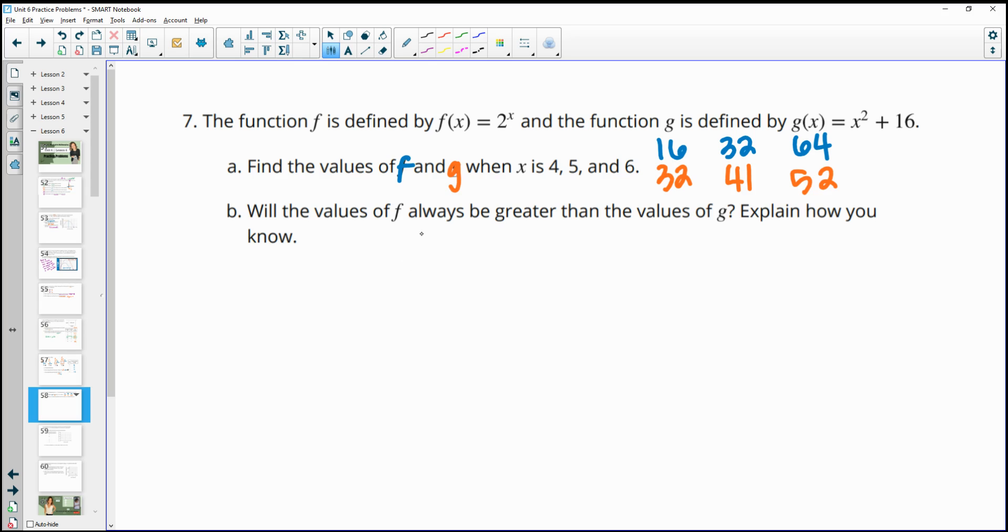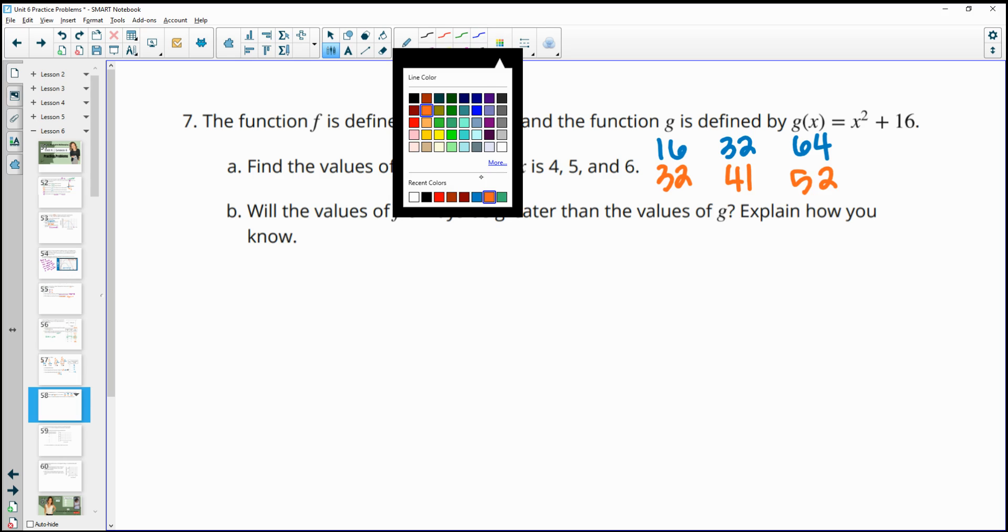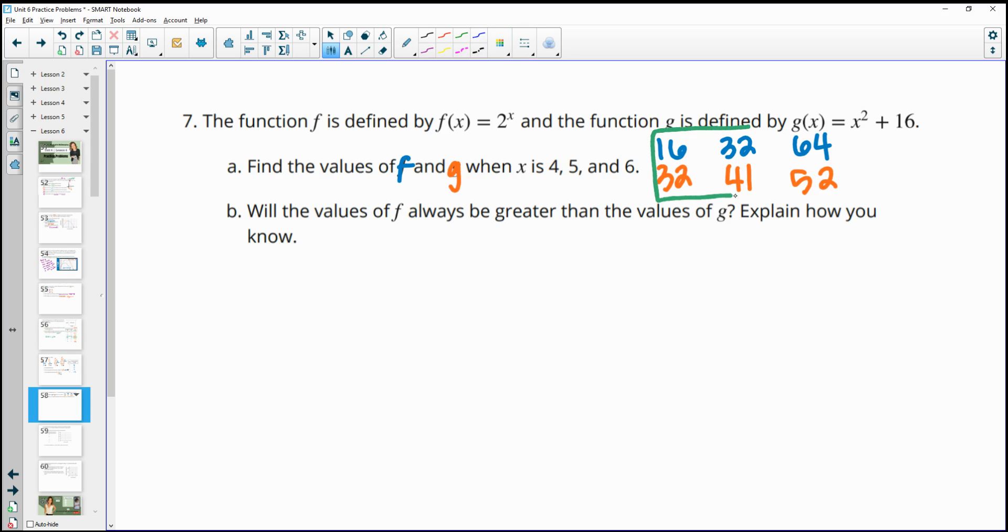Will the values of f always be greater than the values of g and explain how you know? So will the values of f always be greater than g? And so when we look at this, like they're not greater, it's only greater here, right? So there's two options down here where they aren't greater. So f is not greater than g here. So when x equals 4 and 5, f was less. So now moving forward, it's always going to be bigger, right? So as we keep going, f will stay bigger than g. But there's values below that where it's less than it.